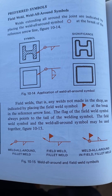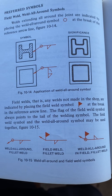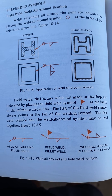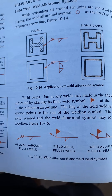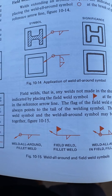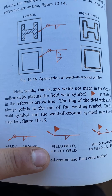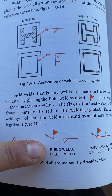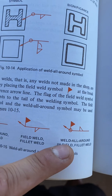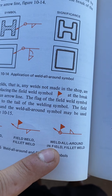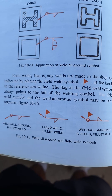the tail of the welding symbol. The field weld symbol and the weld all-around symbol may be used together, as shown in figure 10-15, which illustrates three examples: a weld all-around fillet weld, a field weld fillet weld, and a weld all-around in-field fillet weld.